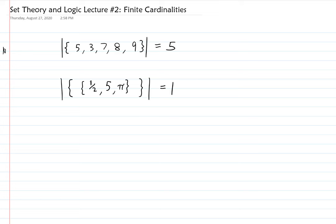Let me show you why using an analogy I introduced last lecture — this will help you on almost every cardinality problem. Think of a set as a cardboard box, and the elements are the things you see when you look into the box. I didn't say the things in the box — I said the things you see when you look into the box.